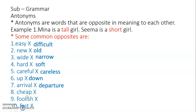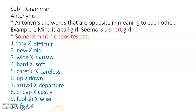And departure — departure is the opposite of arrival. Cheap: the opposite of cheap is costly. A pencil is cheap and a pen is costly. Foolish: the opposite of foolish is wise. And the last one, fast — the opposite of fast is slow.